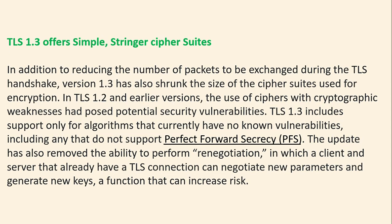TLS 1.3 also offers simpler, stronger cipher suites. In addition to reducing the number of packets exchanged during the handshake, TLS 1.3 has shrunk the size of the cipher suites used for encryption. In TLS 1.2 and earlier versions, the use of ciphers with cryptographic weaknesses posed potential security vulnerabilities. TLS 1.3 includes support only for algorithms that currently have no known vulnerabilities, including removing any that do not support perfect forward secrecy. TLS 1.3 has also removed the ability to perform renegotiation — where a client and server with an existing TLS connection could negotiate new parameters and generate new keys — a function that can increase risk.